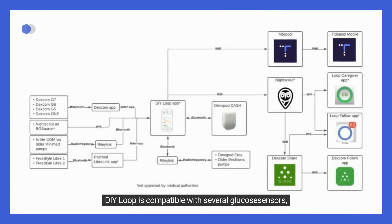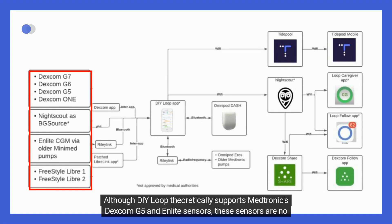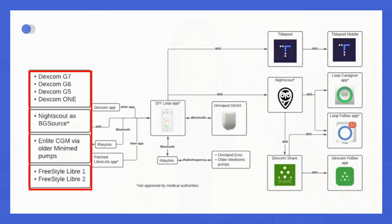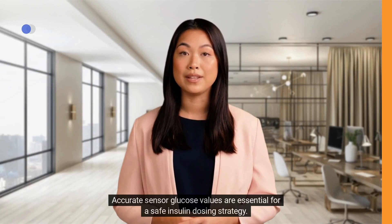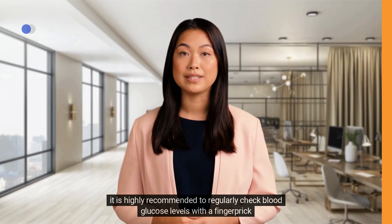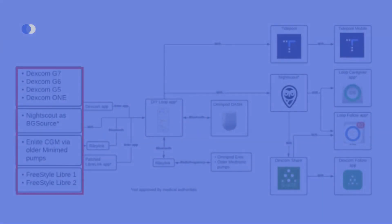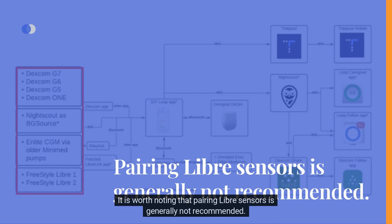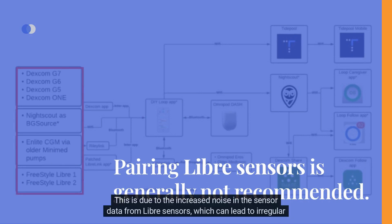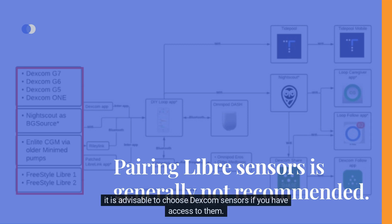DIY Loop is compatible with several glucose sensors including all Dexcom sensors and some Freestyle Libre sensors. Although DIY Loop theoretically supports Medtronic's Dexcom G5 and Enlite sensors, these are no longer available in the market. Accurate sensor glucose values are essential for a safe insulin dosing strategy, so it is highly recommended to regularly check blood glucose levels with a finger prick. It is worth noting that pairing Libre sensors is generally not recommended due to increased noise in sensor data, which can lead to irregular insulin delivery. Therefore, it is advisable to choose Dexcom sensors if available.